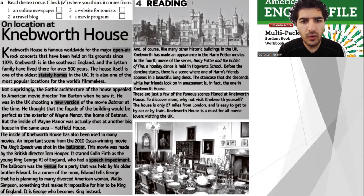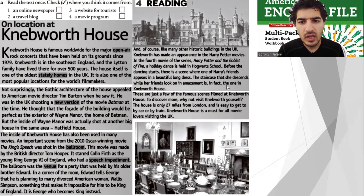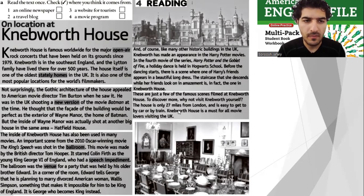And of course, like many other historic buildings in the UK, Knebworth has made an appearance in the Harry Potter movies. In the fourth movie, Harry Potter and the Goblet of Fire, a holiday dance is held at Hogwarts. Before the dancing starts, there is a scene where one of Harry's friends appears in a beautiful long dress. The staircase that she descends while her friends look on in amazement is in fact the one in Knebworth House. These are just a few of the famous scenes filmed at Knebworth House. The house is only 27 miles from London and is easy to get to by car or by train — a must for all movie lovers visiting the UK. Personally I think it's a website for tourists.